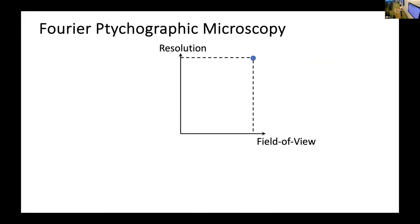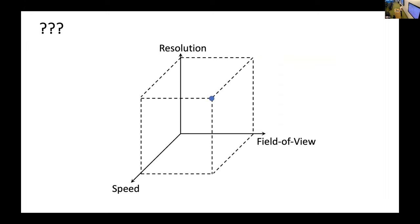So Fourier ptychographic microscopy is great because you can get high resolution and high field of view. However, as I just explained, you have to take many images and then computationally post-process them, which leads you to very low speed. What we would like is we would like to get high resolution, high field of view and high speed.